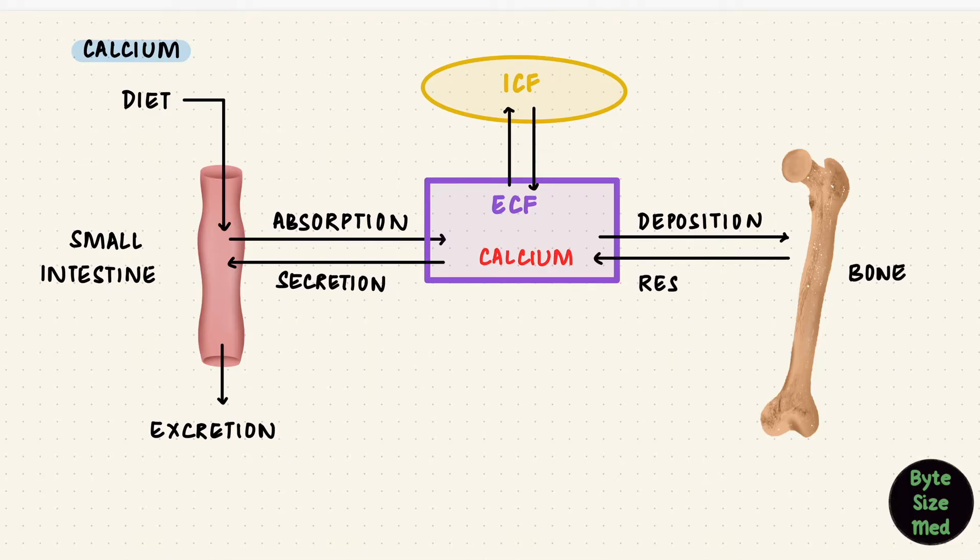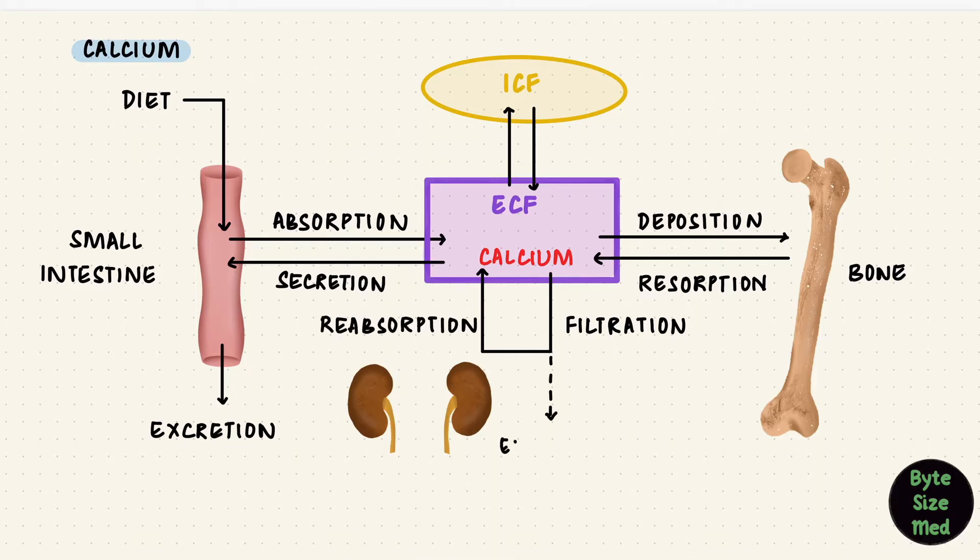So bone resorption, which is the digestion of bone matrix, would put calcium back into the extracellular fluid. The kidney filters plasma and with it calcium, but most of the filtered calcium gets reabsorbed and a very small amount gets excreted by the kidneys. That's three organs that PTH can work with to regulate plasma calcium when its levels change.